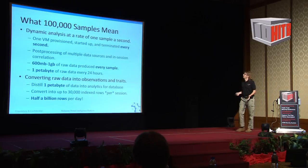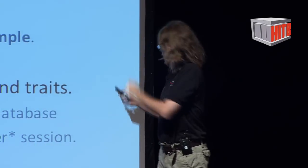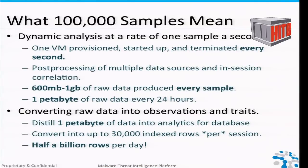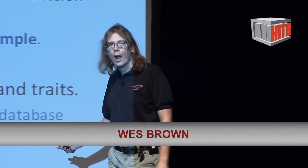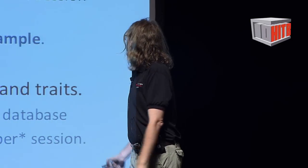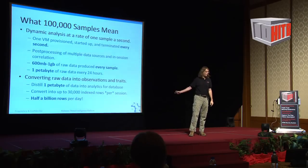100,000 samples — we analyzed at that particular rate, and we're doing more than that right now. One Windows virtual machine is created, started up, and terminated every second. Every second, a new VM is being created, analyzed, and done. We are post-processing the multiple data sources. Every sample we analyze generates about one gigabyte of raw data, so every second we're generating one gigabyte of raw data to process and analyze. This is one petabyte of raw data in 24 hours.